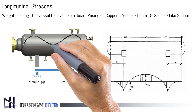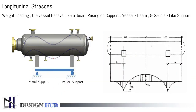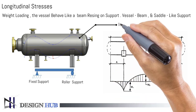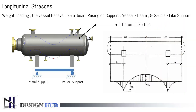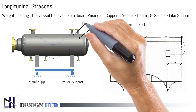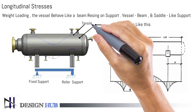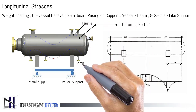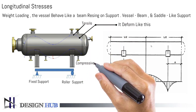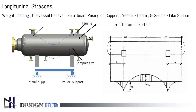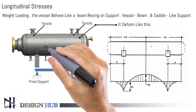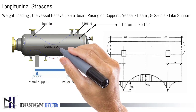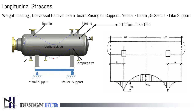Due to longitudinal stresses, the vessel deforms, and stress is induced at the saddles. The tensile stresses are on the top and compressive stresses are at the bottom. These stresses are combined with the longitudinal stress in the cylinder that is caused by the design pressure, which is a tensile stress for internal pressure.